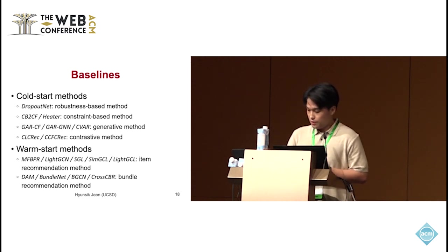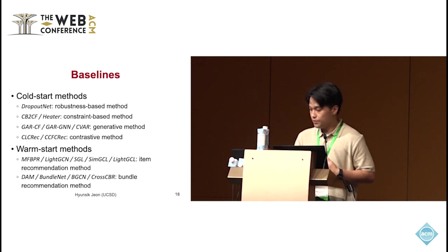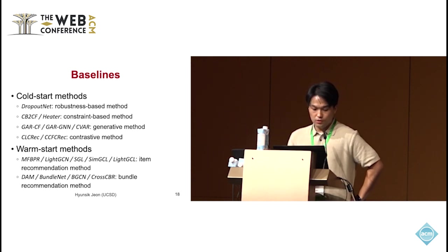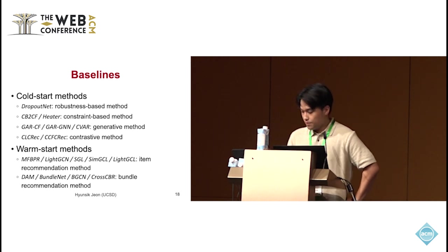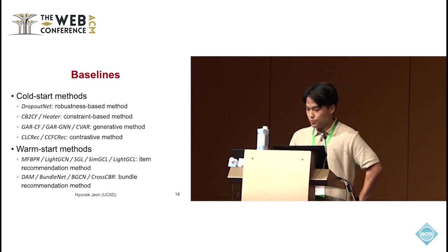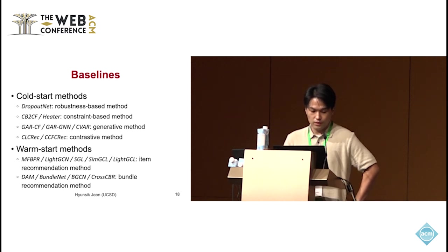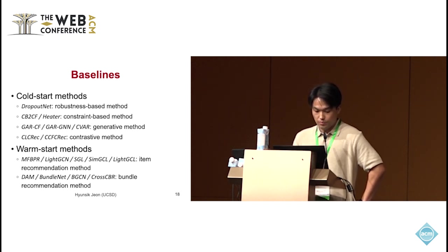We compare COHIT against existing baselines. For cold-start methods, we include various methods using different concepts like robustness, constraint, generative, and contrastive methods. For warm-start methods, we include several item recommendation methods like MFBPR, LightGCN, and more. And for bundle recommendation, we compare with DAM, BundleNet, BGCN, and Cross-CBR.